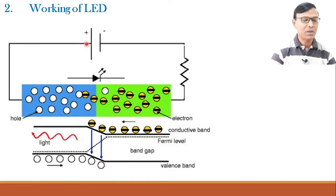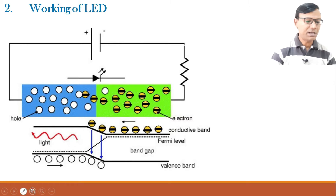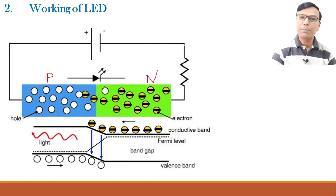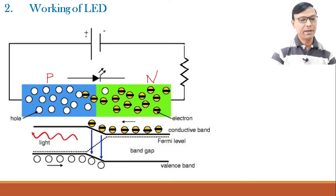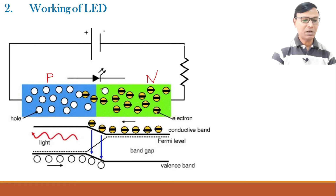The light emitting diode works in the forward bias condition. In a p-type material, holes are the majority charge carriers; in n-type material, electrons are the majority carriers. When you forward bias the diode, the holes are repelled by the positive terminal of the battery and the electrons are repelled by the negative terminal, and hence the depletion layer goes away. When the electrons from the n-side fall into the holes in the p-side, they release energy in the form of light.